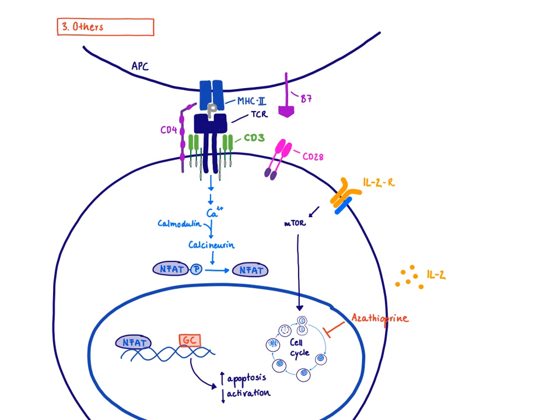Glucocorticoids also dampen the immune response after organ transplant. They act at nuclear receptors, targeting the DNA inside the nucleus. They decrease the production of several cytokines and increase expression of apoptotic genes, driving T-cell apoptosis. Because fewer cytokines are produced, they also decrease T-cell activation overall.